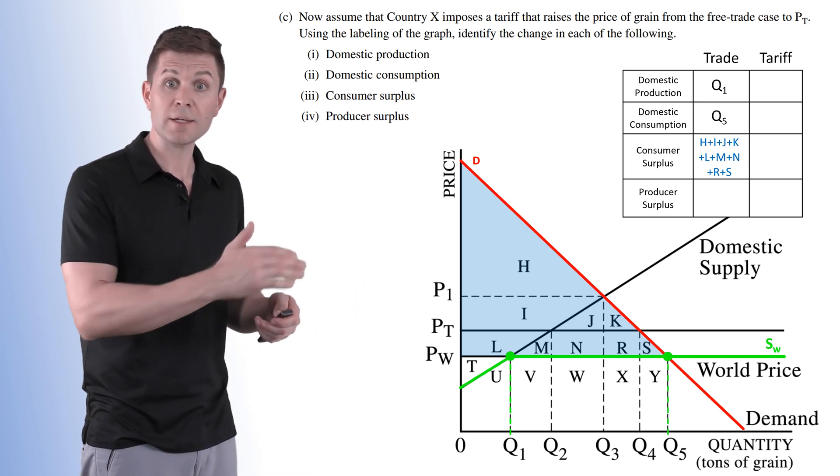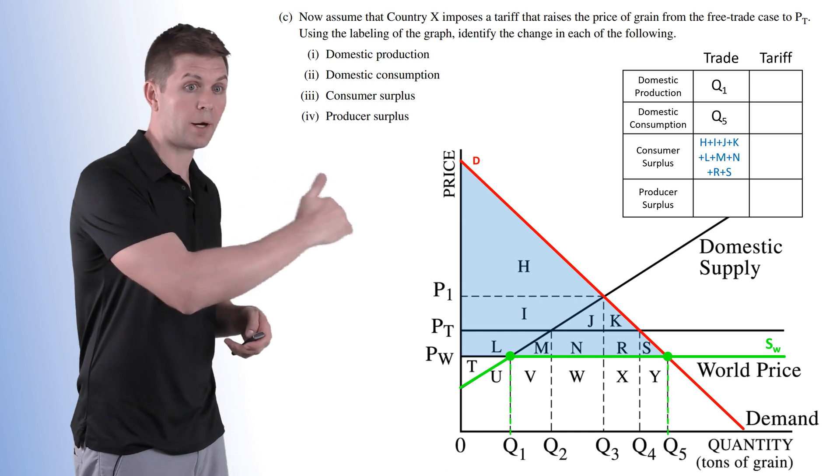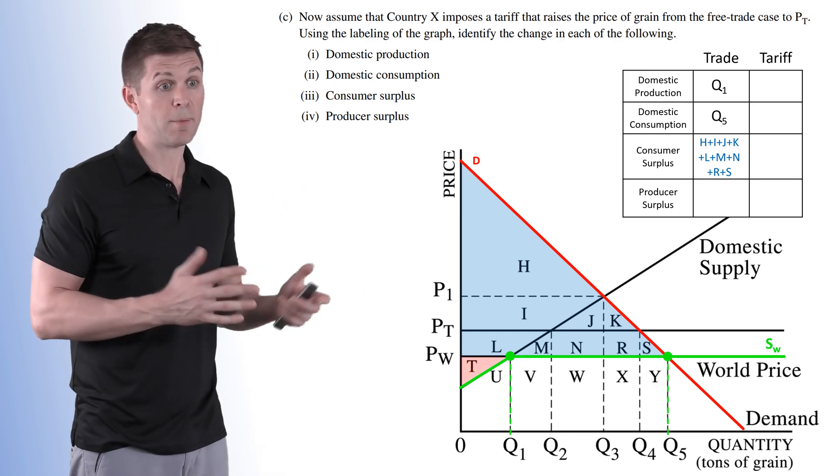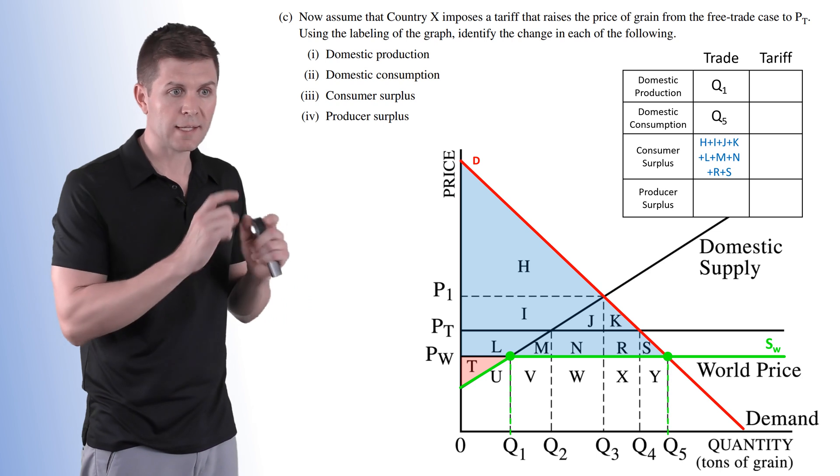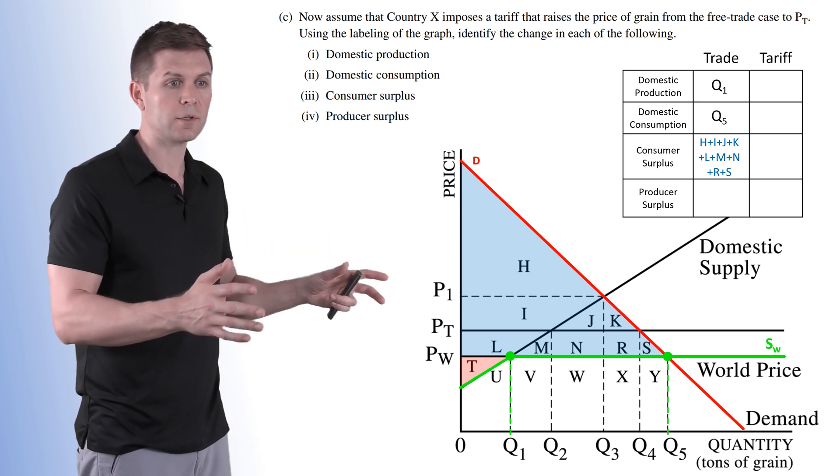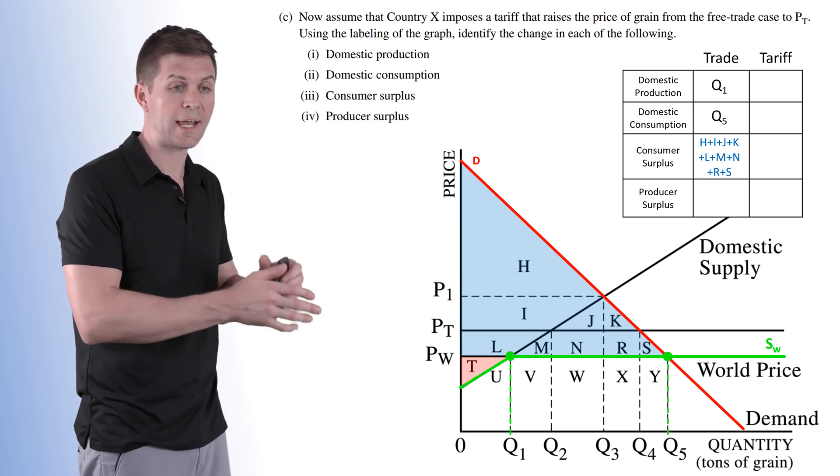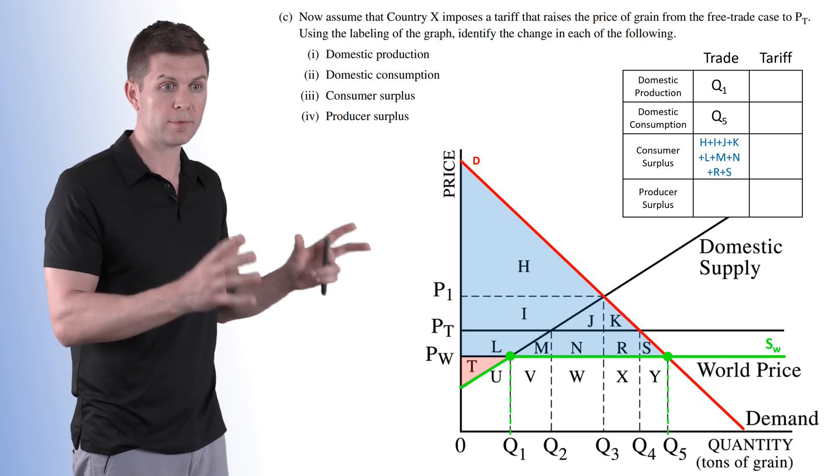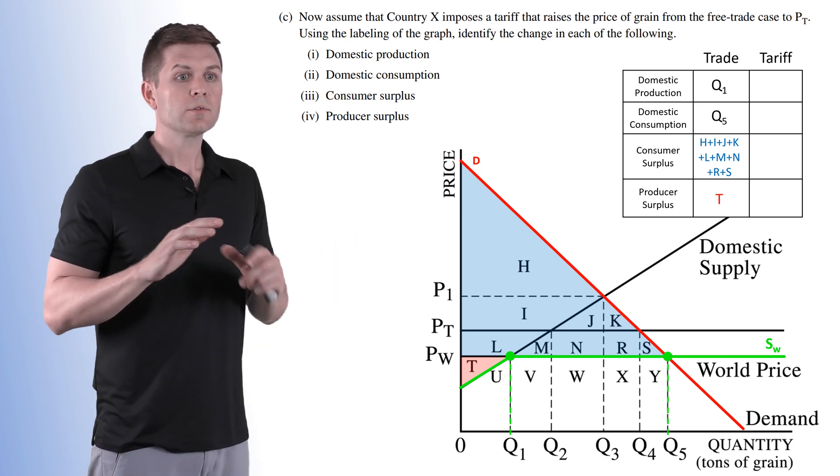Now producer surplus, everything below the price but above the supply curve, domestic supply curve, is T. That's it. That little area right there represents all the producer surplus that is gained domestically from this market. So T.